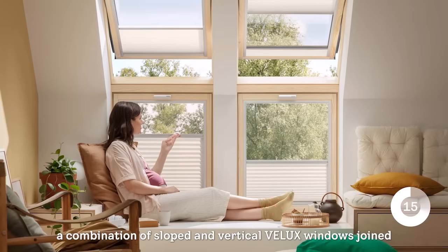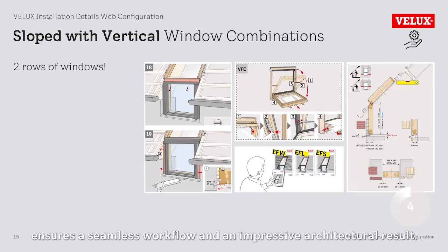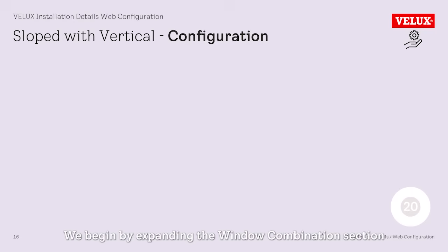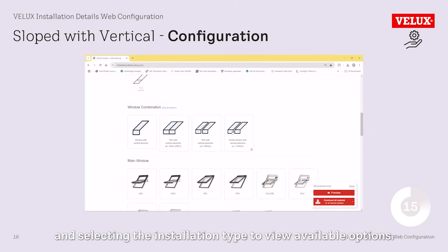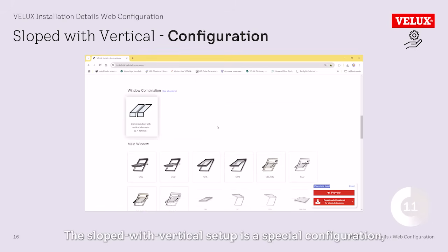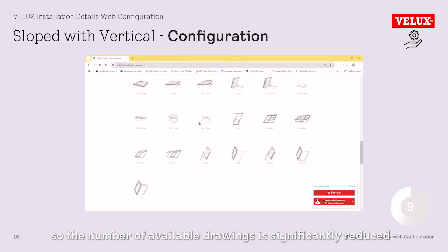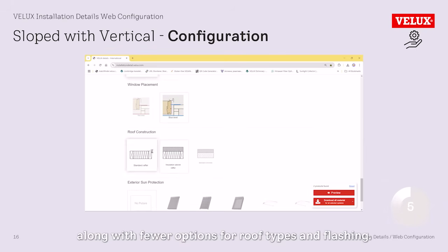Let's explore a more complex configuration for a sloped roof: a combination of sloped and vertical Velux windows joined at the building's eave. This elegant solution involves a more advanced installation and detailing process. We begin by expanding the window combination section and selecting the installation type to view available options. The sloped with vertical setup is a special configuration, so the number of available drawings is significantly reduced, along with fewer options for roof types and flashing.